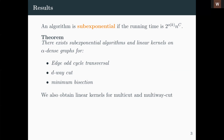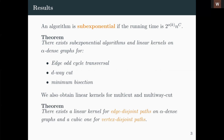The paper has several results, and one part I will explain today is how to use the same ideas designed for PTASes to design sub-exponential algorithms for many similar problems. In particular, we have the theorem that there exist sub-exponential algorithms and linear kernels on alpha-dense graphs for numerous problems such as Edge Odd Cycle Transversal, d-way cut, and minimum bisection. In general graphs there is no sub-exponential algorithm under the ETH assumption for these problems, but here using this structure we were able to design such algorithms. We also obtained linear kernels for multi-cut and multi-way cut on this class.